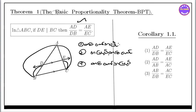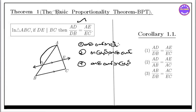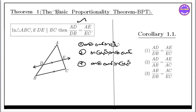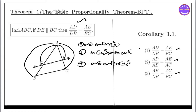AB by DB equal to AC by EC — Yamla Daga update. AB equal to AE by AC — Yamla Daga Nambadi.